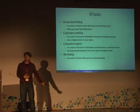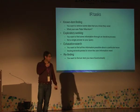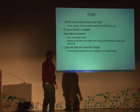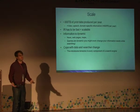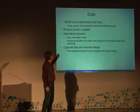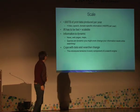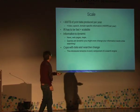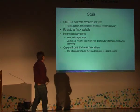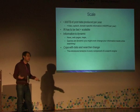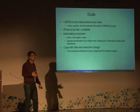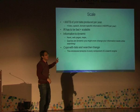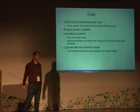Refinding means you've been to a site before and want to find it again — that happens more often than you'd think. On scale: there are 300 terabytes of print data produced per year; with video, images, and digital information, probably 600 petabytes per year. You have to be fast and scalable. Information is dynamic, and you have to cope with the user changing her mind, which introduces tensions in every component of the search engine design.